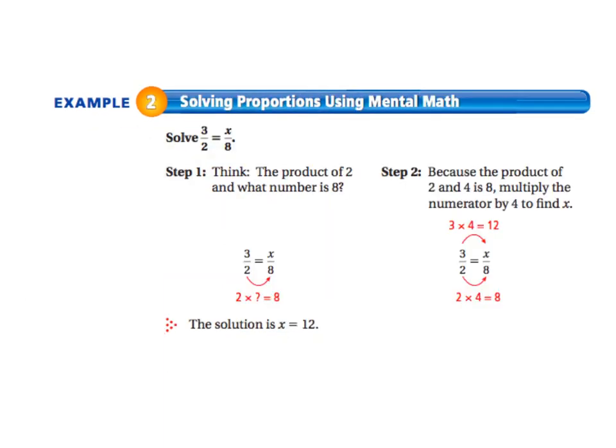Now let's take a look at example two, solving proportions using mental math. So the problem we're given to solve is 3 halves equals x over 8. So our first step, as always, is to write down the problem. And here's step one. We're going to think, which is always a good first step, the product of 2 and what number equals 8.